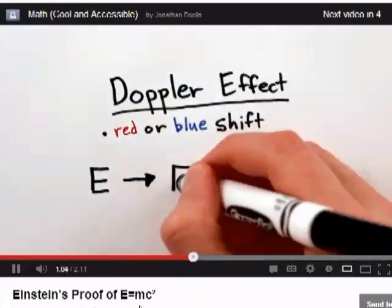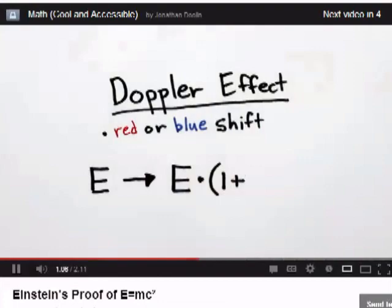And for our purposes, it amounts to multiplying the energy of the light by 1 plus your velocity squared, divided by twice the speed of light squared.